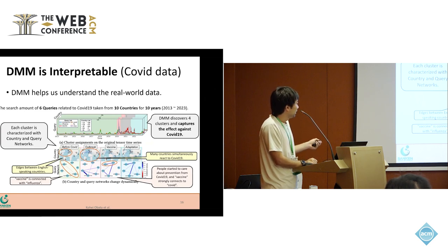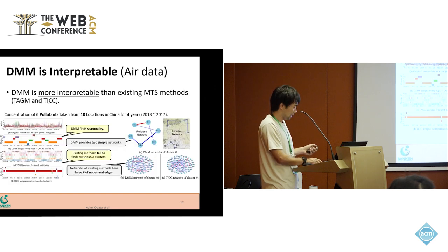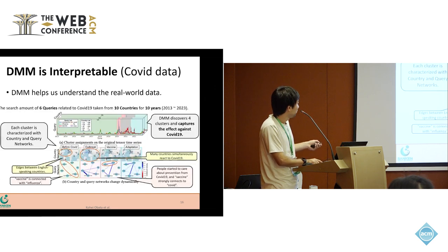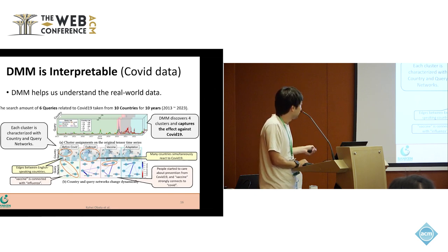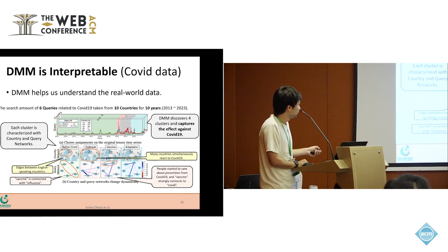After processing by DMM, it discovers four clusters and captures the effect of COVID-19. Each cluster is characterized with a country network and a query network. We name each cluster: before COVID, outbreak, vaccine, and adaptation.